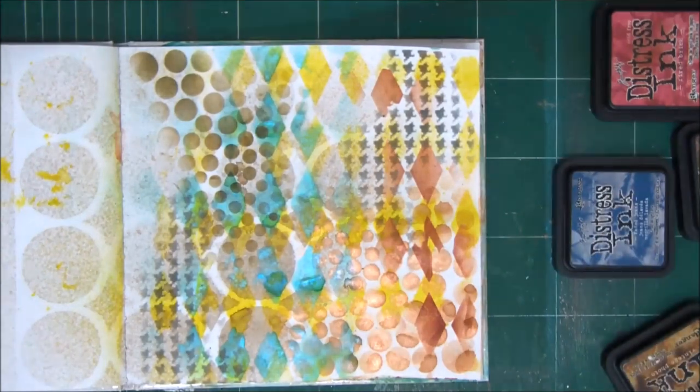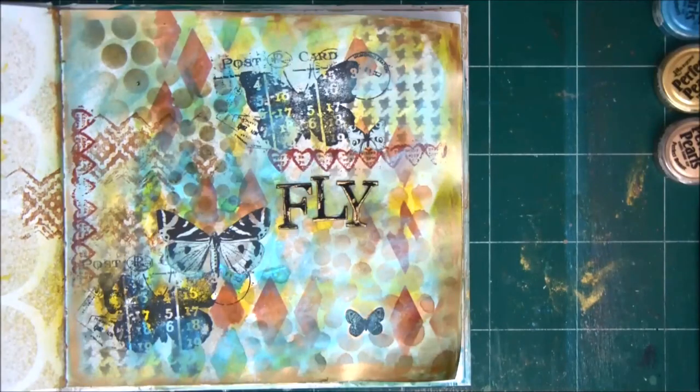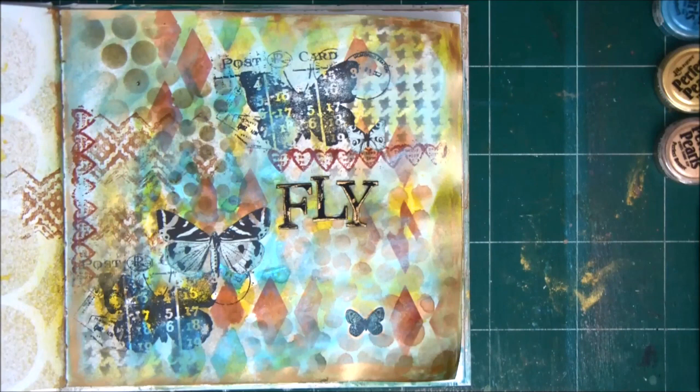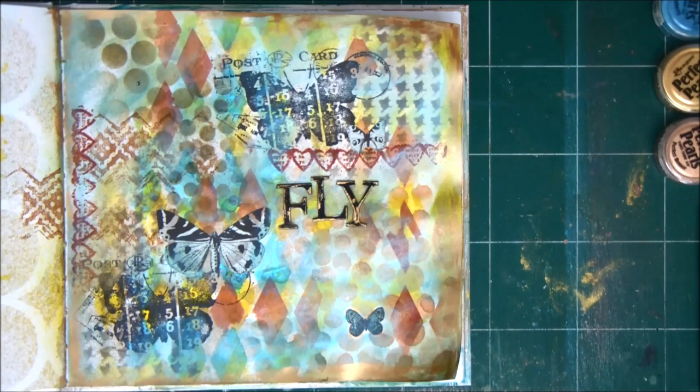So we have seven layers of stencils and this is how the art journal page looks when it's finished. You can make really beautiful backgrounds just by layering a few patterns, a few stencils with different colors. So we made seven layers. You can definitely do more if you want.